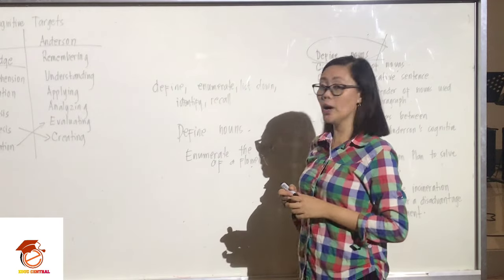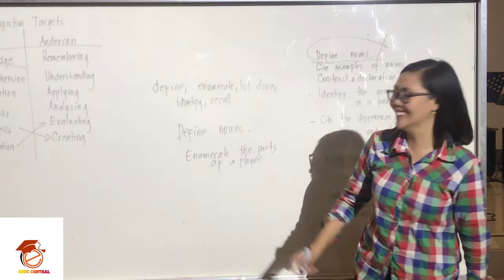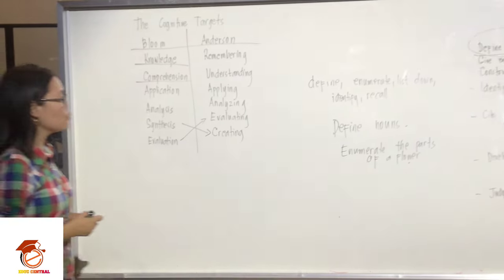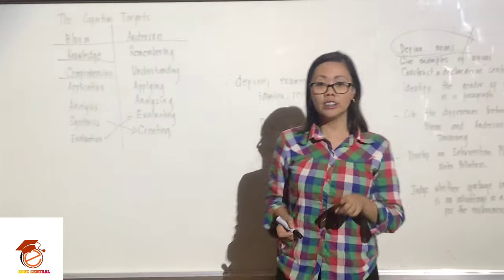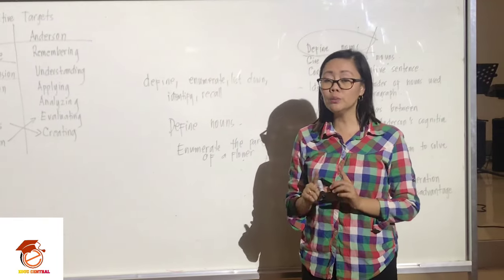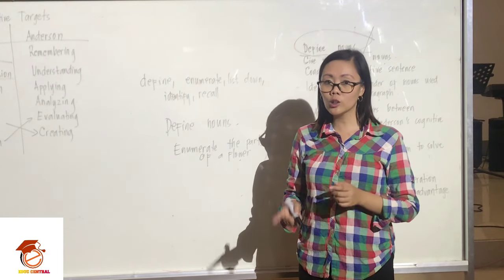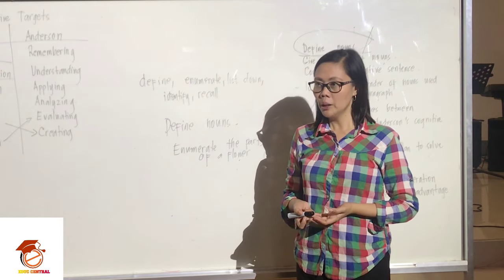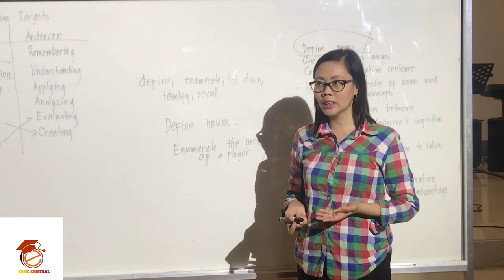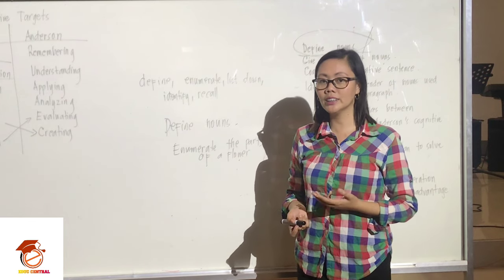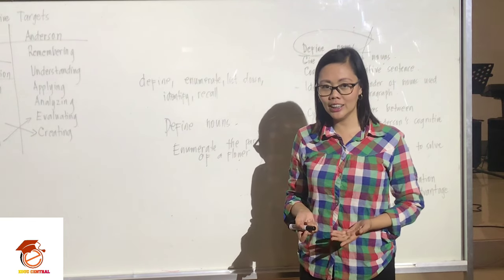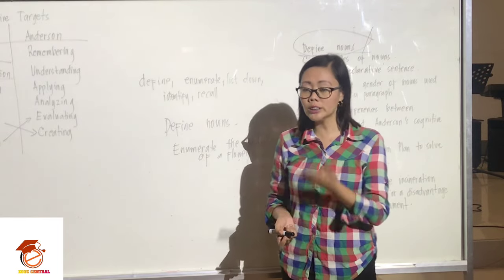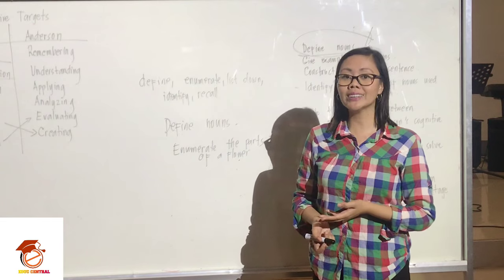You can also have objectives starting with 'state.' For example in political science: state the preamble of the Philippine Constitution. As long as they can memorize the preamble, they will be able to meet the taxonomy knowledge. The first level just encourages memorization — even if they don't understand it, as long as they can recall, they have the skill of knowledge. The next level is comprehension.